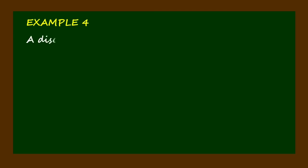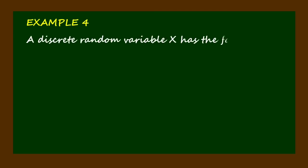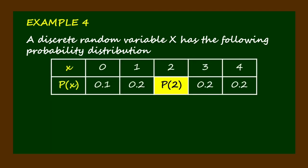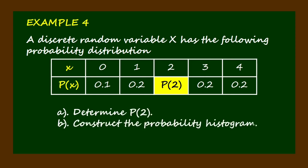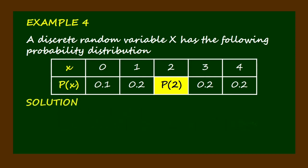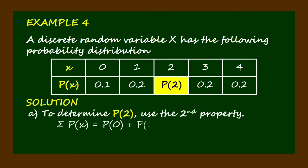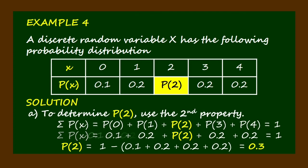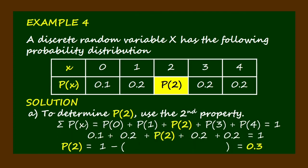Example 4. A discrete random variable x has the following probability distribution. Determine P(2) and construct the probability histogram. To determine P(2), use the equation specified in the second property, taking the sum of all the probabilities equal to 1. After performing the indicated task, we get the value of P(2) equal to 0.3. How did we get 0.3 as the value of P(2)?